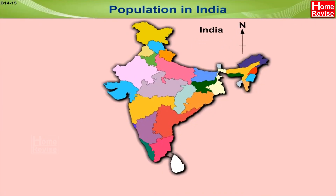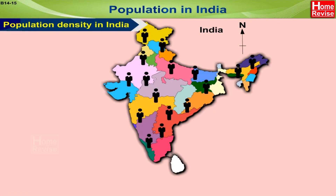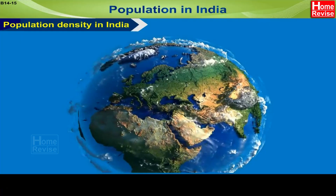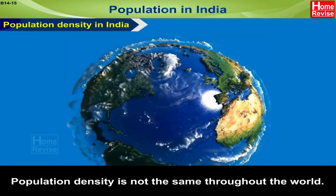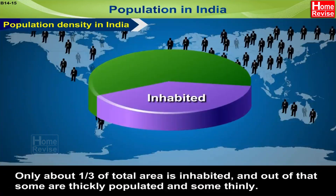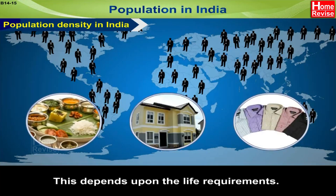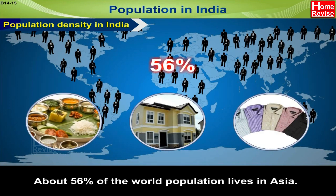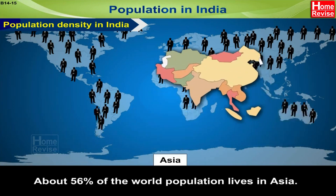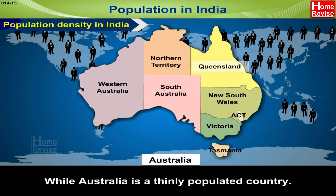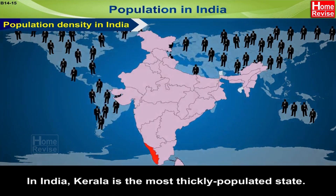Population density in India is not the same throughout the world. Only about one third of the total area is inhabited, and out of that, some areas are thickly populated and some thinly. This depends upon life requirements. About 56% of the world population lives in Asia, while Australia is a thinly populated country.